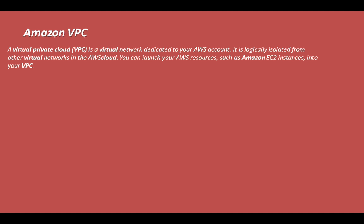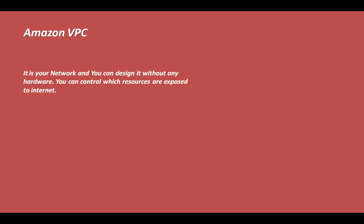You will be able to launch your AWS resources such as Amazon EC2 into the VPC. In simple terms, it is your logical network which you have created within AWS and you can design it as per your requirement or business need. The best thing is, like the cloud computing model, you are not paying any upfront cost on hardware — you just subscribe to this service, log into the AWS console, and start creating different rules and subnets within the VPC.